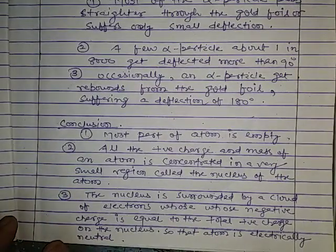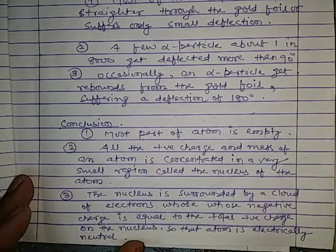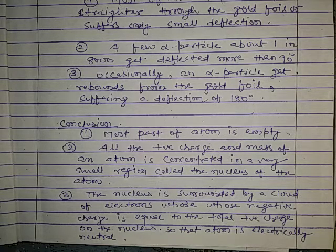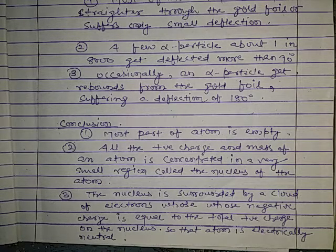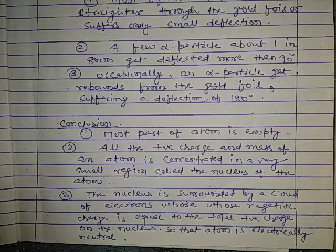After the observations, we conclude: the first conclusion is that most of the part of the atom is empty. The second conclusion is that all the positive charge and mass of an atom is concentrated in a very small region called the nucleus of the atom. Almost 99% of the mass of the atom is concentrated in the nucleus.